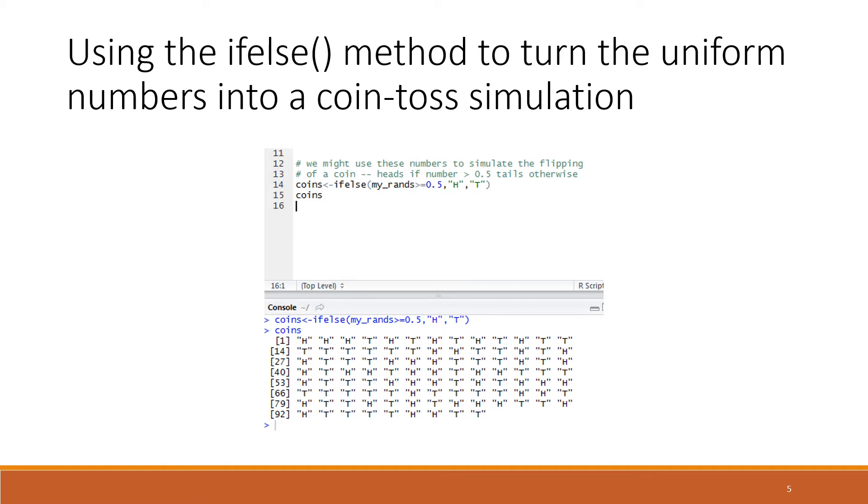If that condition is true, it produces a capital H, otherwise it produces a capital T. It's doing that for each element of the array, creating an array of H's and T's, presumably half H's and half T's. Then in line 15 we repeat the word coins, and that echoes the results in the console.